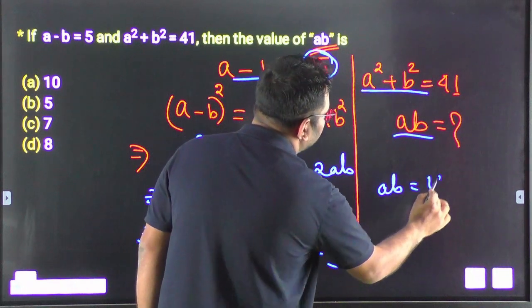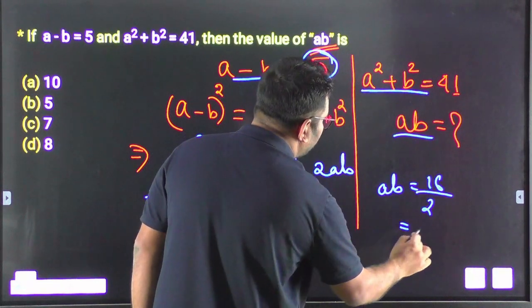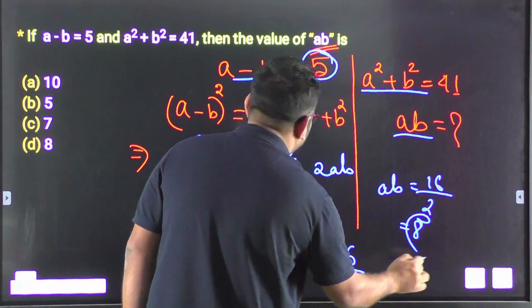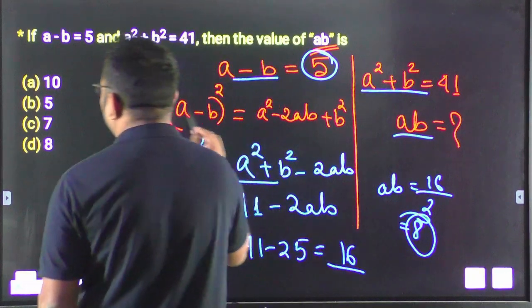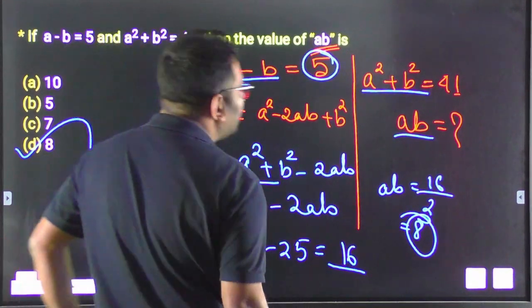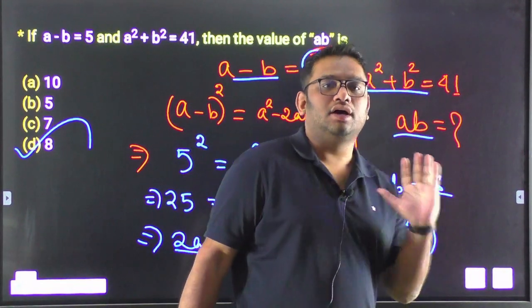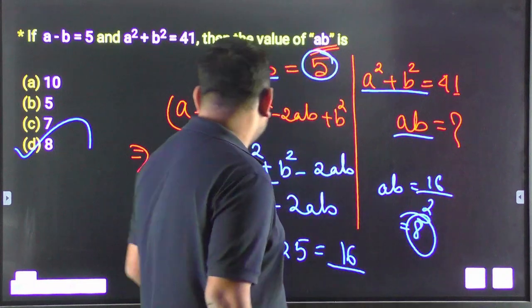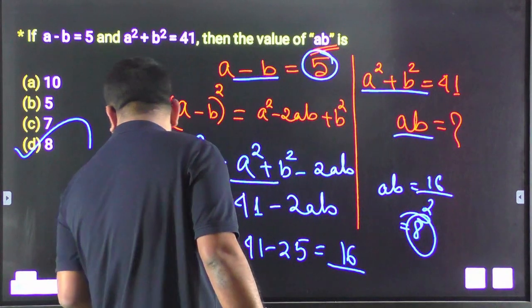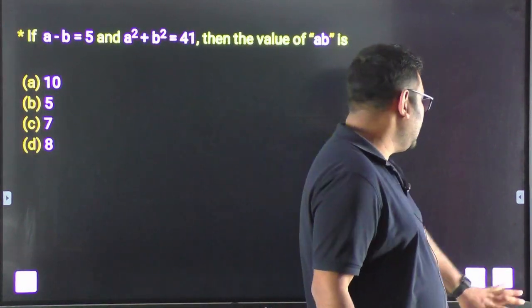16 divided by 2 equals 8. So the answer is 8. The option is option D. Put your answer in the comment box and I will explain.